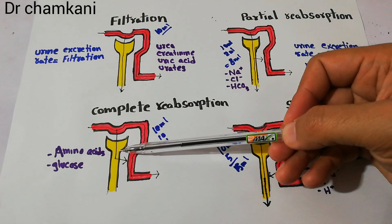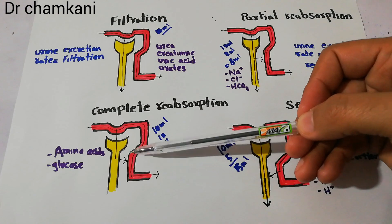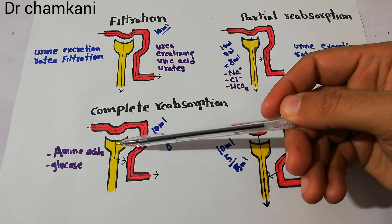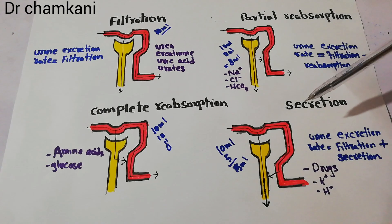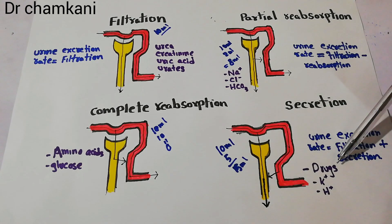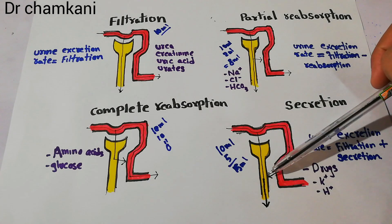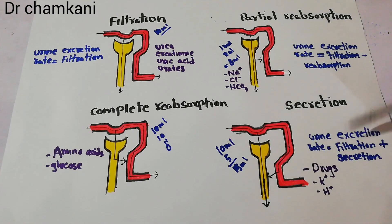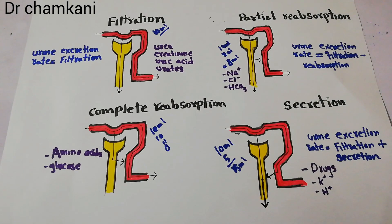A question arises: why are amino acids and glucose filtered in the first place if they are going to be completely reabsorbed? We will answer this question in our coming lectures. Finally, secreted substances include drugs, potassium, and hydrogen, among others — they are not only filtered but also secreted, and their urine excretion rate is filtration plus secretion rate. That's all about the examples of substances dependent upon filtration, reabsorption, and secretion for their excretion.